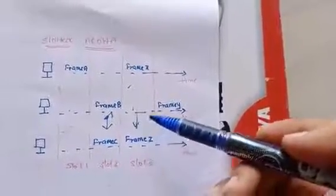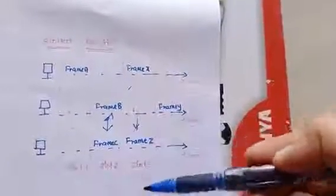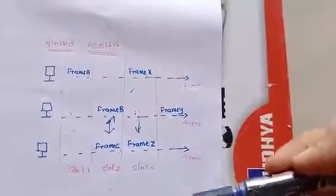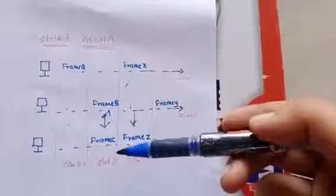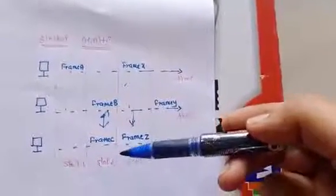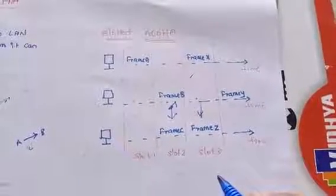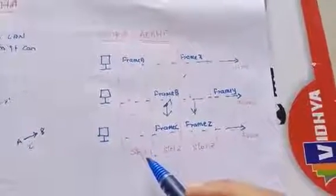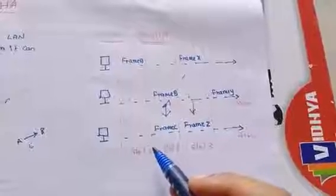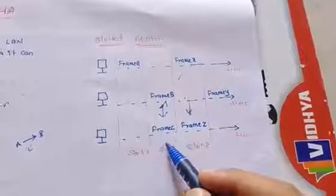In slotted ALOHA, the shared channel time is divided into discrete intervals called time slots. Any station can transmit its data in any time slot, but the station must start its transmission from the beginning of the time slot. If the beginning of the time slot is missed, the station must wait until the beginning of the next slot.